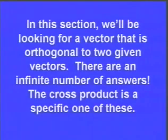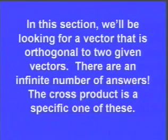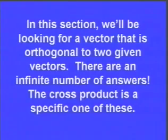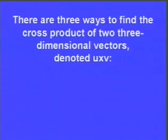The one going behind the screen was just the negative of the one coming out. Since there are an infinite number of answers, we're going to be looking for a specific one — and it's going to be called the cross product, denoted u cross v.